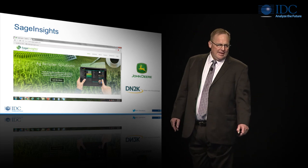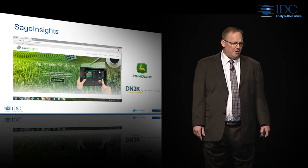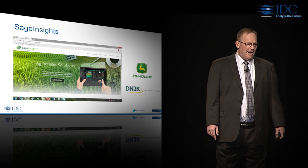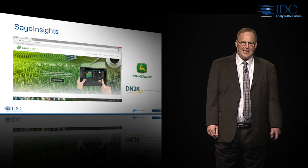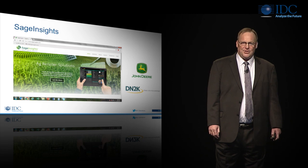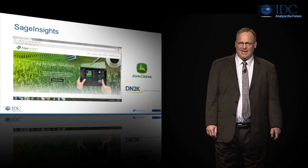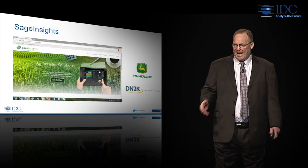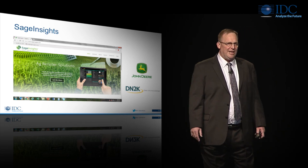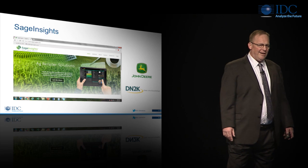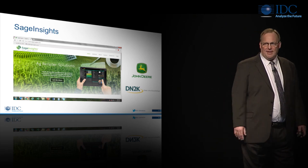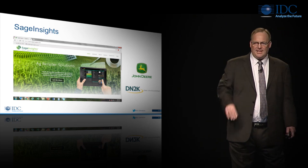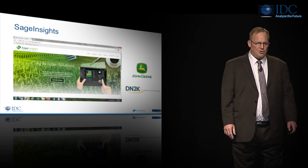And then finally, Deere. Sage Insights — they're collecting data off their tractors, turning that into a better understanding of what's being planted, and creating proactive advice for the farmer about how to make more money. Again, three examples here where data plus code really does equal innovation.